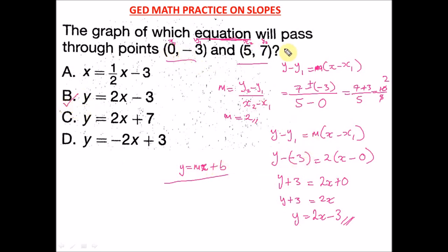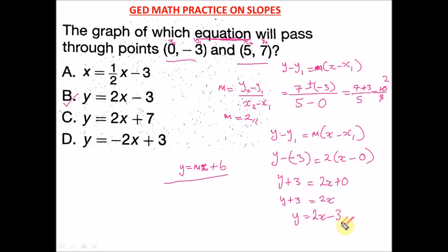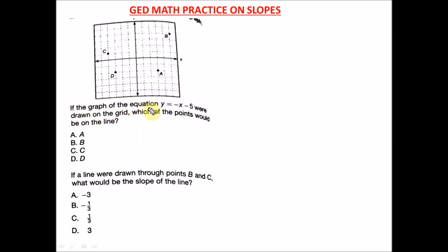When you have two points and are told to find the equation: first find the slope, then slot everything into the point-slope formula, and make sure y stands alone. x should never stand alone and you shouldn't have x on both sides — that is wrong.